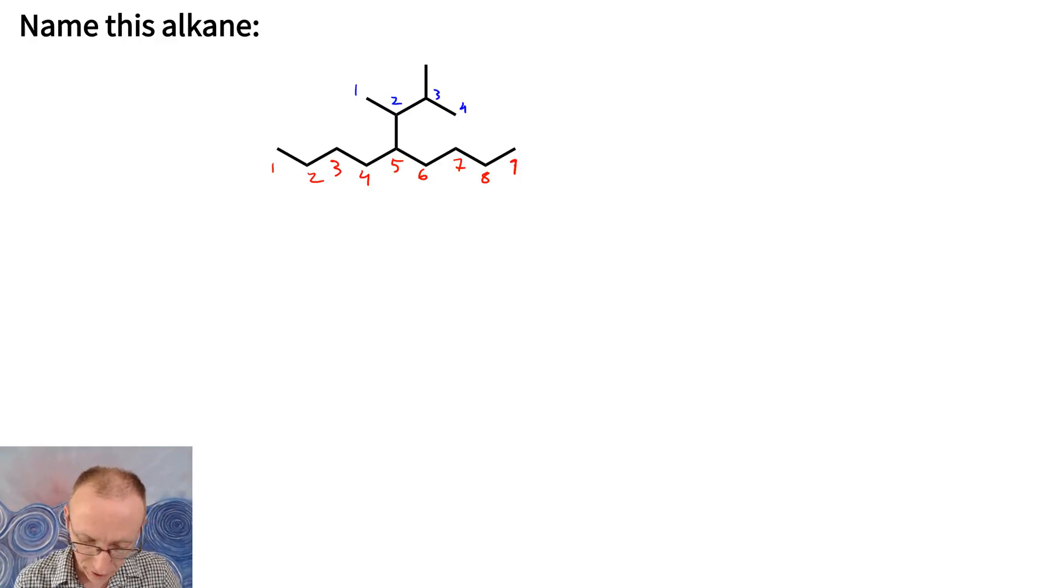If we number from the other direction we'd end up with one, two, three, four. And there's no way to get this so that it's longer than a four carbon chain. So it's definitely going to be a butyl substituent of some type.